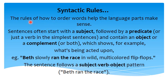English parts of speech often follow ordering patterns in sentences and clauses, such as: compound sentences joined by conjunctions 'and,' 'but,' or 'or'; and multiple adjectives modifying the same noun following a particular order according to their class, such as number, size, color — as in 'six small green chairs.' The rules of how to order words help the language parts make sense. Sentences often start with the subject, followed by a predicate or verb, and contain an object or complement showing what is being acted upon. For example: 'Beth slowly ran the race in white multicolored flip-flops.' The sentence follows a subject-verb-object pattern: 'Beth ran the race.'